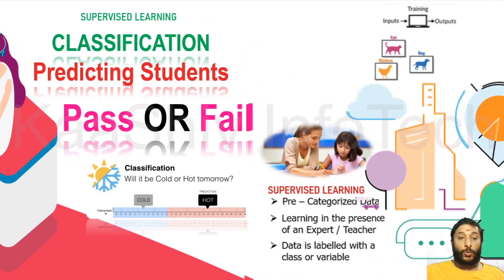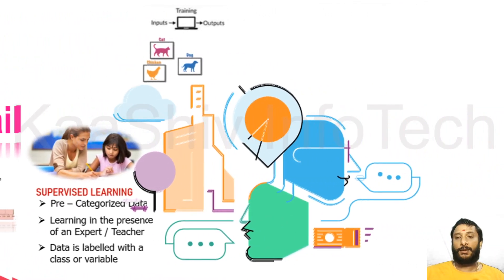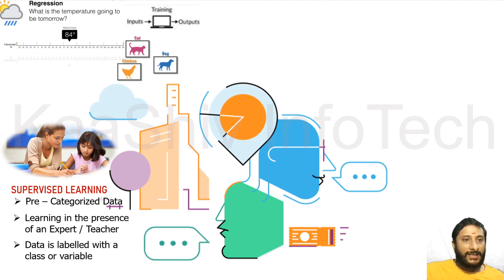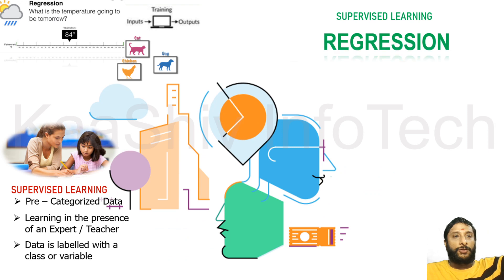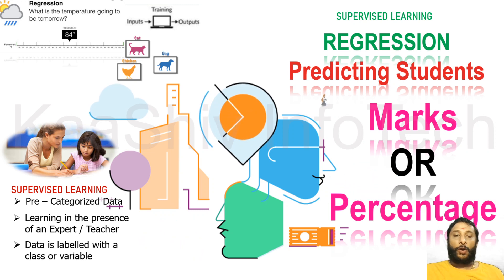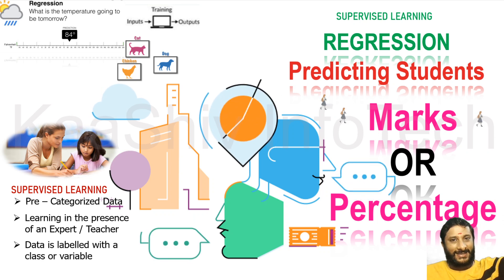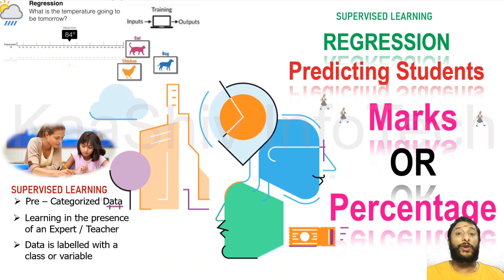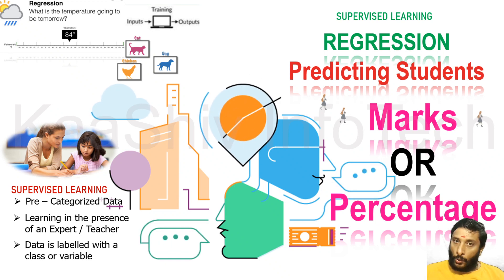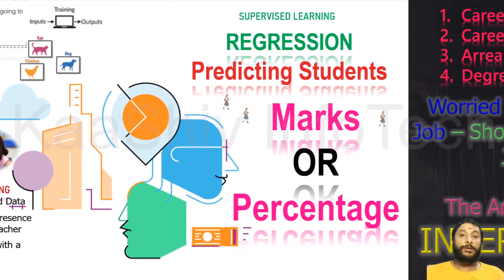The next subdivision is regression. Regression means we do some analysis to predict something — like future prediction. For example, what is the temperature going to be tomorrow? In classification, I give you data now and it tells you what it is. But with regression, I have data now and I want to know what the possibility could be in the future. That's your regression in supervised learning.